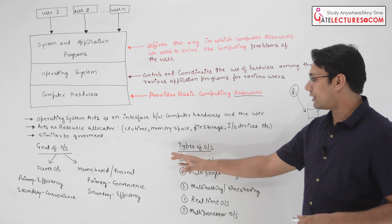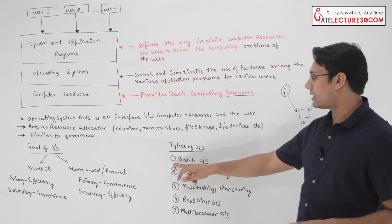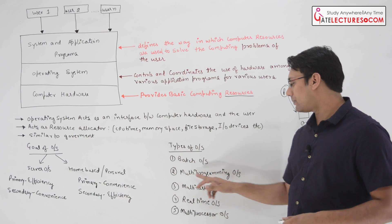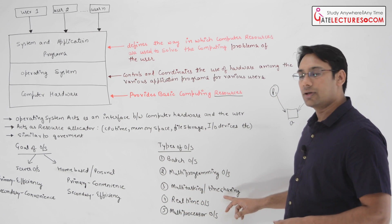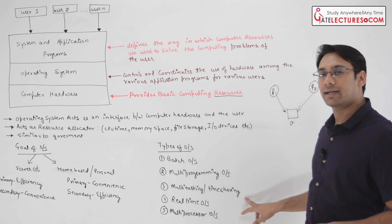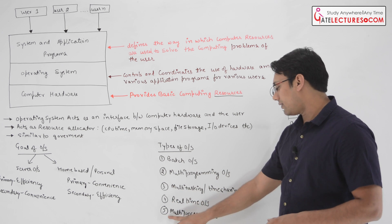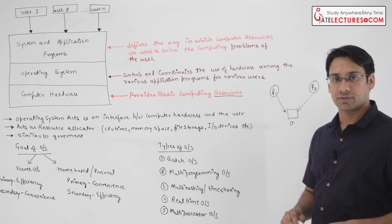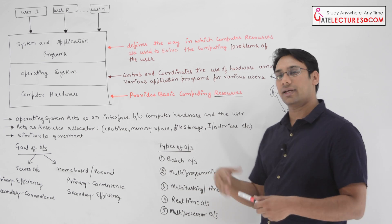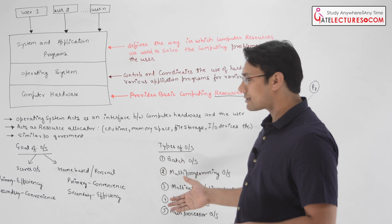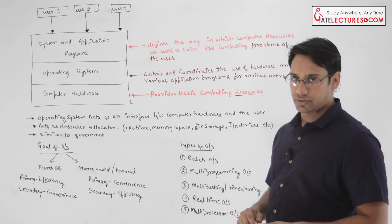We have different types of operating systems: batch operating system, multi-tasking operating system (also called time sharing operating system), real-time operating system, and multi-processor operating systems. In the next coming videos, we are going to discuss all these types of operating systems and then jump on to the process concepts.